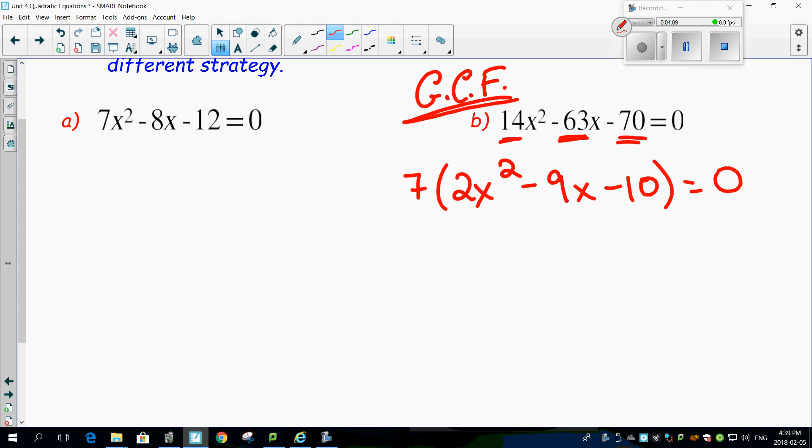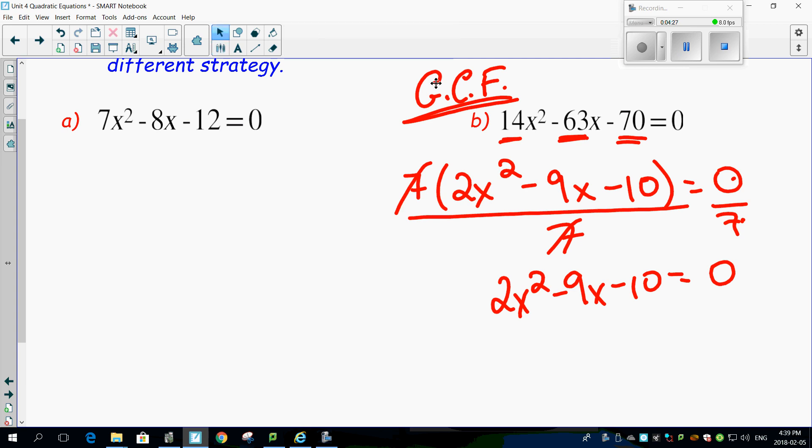Now, the cool thing is, don't forget, if you divide everything by 7, this side and this side, divided by 7, that cancels out. 0 divided by 7 is still 0, giving you a nicely reduced version of the formula. There we go. And now let's use the discriminant on this. The discriminant being B squared minus 4AC.